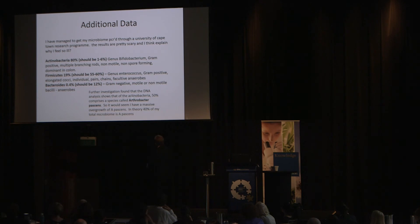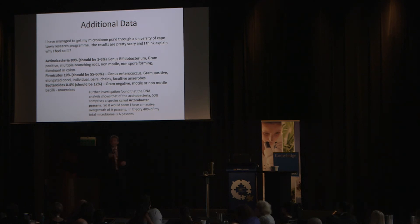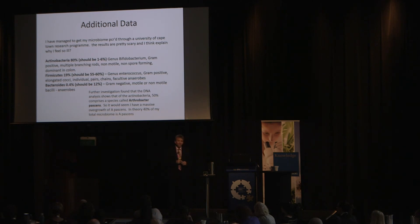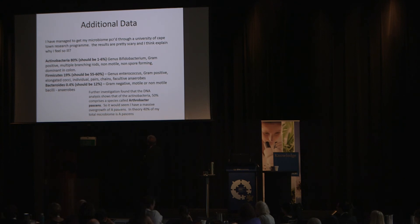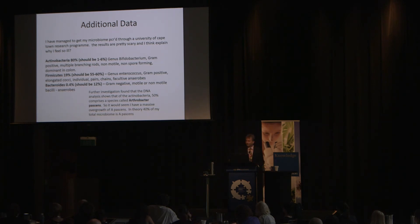But here's the kicker: within the Actinobacteria section, a specimen called Arthrobacter pascens existed. How many of you have heard of Arthrobacter pascens? None. It doesn't cause arthritis, but it's found in soil — it shouldn't be in you. Although there's one paper published on an IBD patient who had Arthrobacter, not of the pascens variety. We have a patient with indications of IBD but no signs of it. In theory, he has a massive overgrowth of Arthrobacter pascens — 40% of his total microbiome is a soil-based organism. What happened in 1992? Went to Malawi. This, we suspect, is our pathogen.